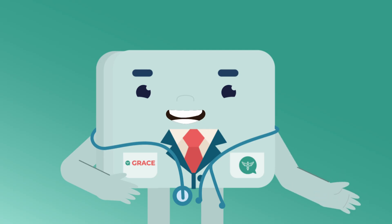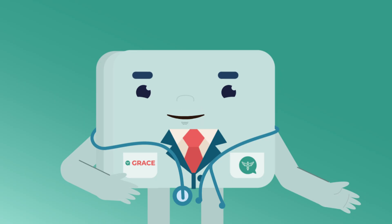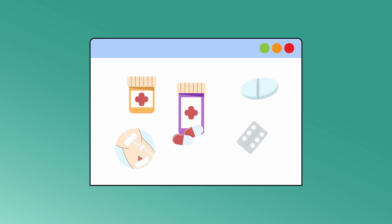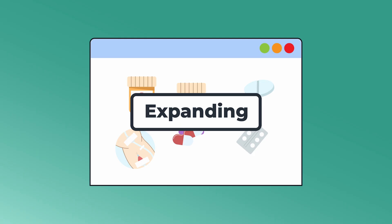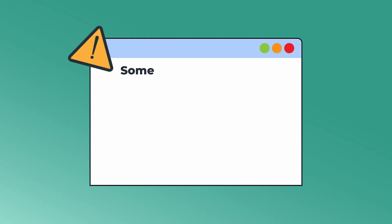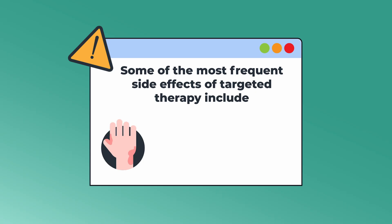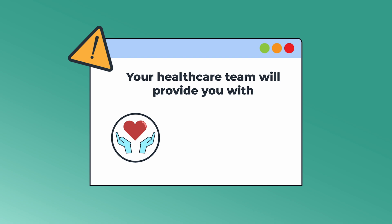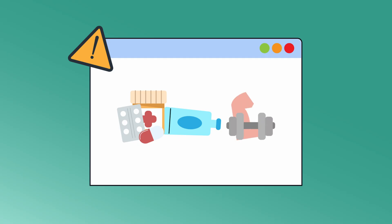Normal healthy cells are usually spared from the effects of these drugs. However, this is not a perfect process. Targeted therapies can still affect some normal cells and organs, and because of that, some side effects may happen. Targeted therapy is generally well tolerated, but it can still cause side effects. Some of the most frequent side effects include skin rashes, diarrhea, fatigue, and changes in blood pressure. It's important to communicate any side effects you experience to your healthcare team so they can help manage them effectively. Your healthcare team will provide supportive care, which may include medications such as pills or creams, lifestyle changes, and other supportive therapies.